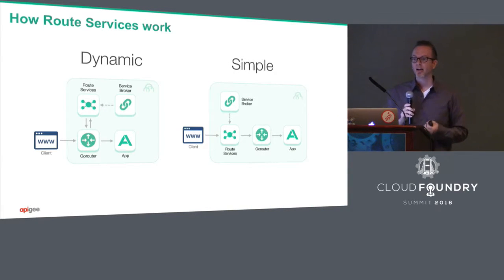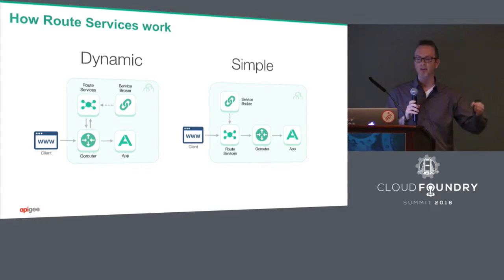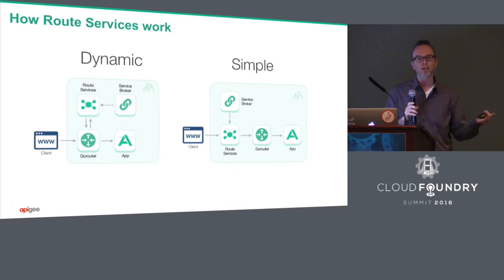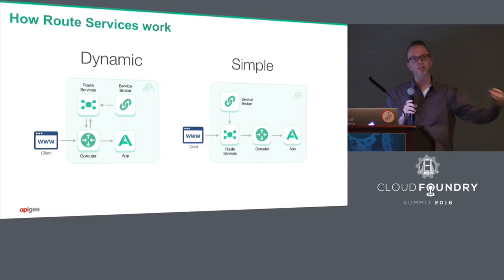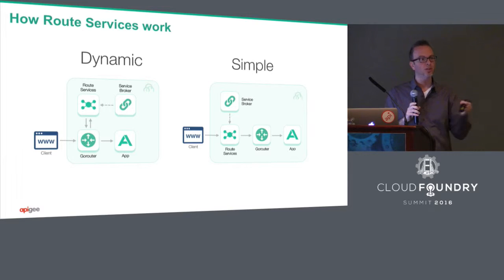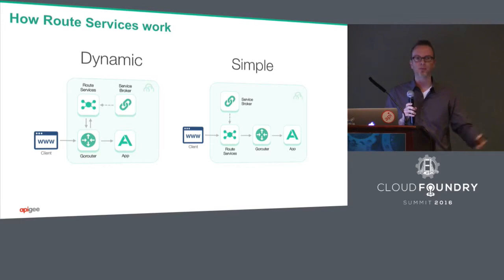You can do this in a couple of different models. A simple model is to put a virtual appliance in front of Cloud Foundry where every bit of traffic goes through that route service. Or you can be more dynamic, where traffic is inspected once it comes into the cloud controller — if it matches the route, it goes back through the route service, does whatever that service does, and comes back through. That's great if you don't want all traffic to go through. And you can do user-defined versions of this — you don't have to buy commercial software. You can hook it up to your in-house instrumentation or preferred caching tool.